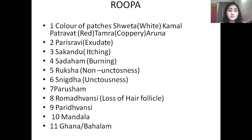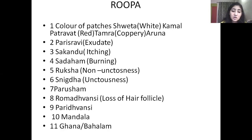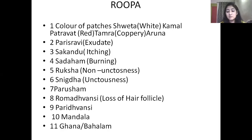Now, Lakshanas or clinical features. Color of the patches can be Shweta, that is white; Paravata, that is red; Tama, that is coppery or Arunvarna. Another lakshana is Parisravi, that is exudative in nature. There may be Sadanam, Rukshita, Nikshita, Parusham, loss of hair follicles that is Romadhvamsi, Mandala or Ghana or patches. These are the Lakshanas of Shwitra Roga.